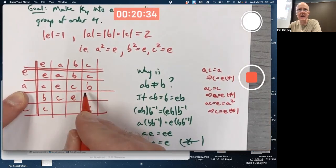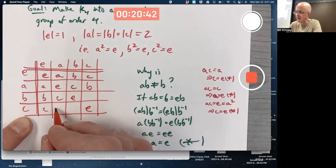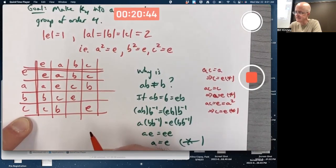Yes, each element in the group occurs in this role exactly once. An analogous argument would say C times A equals B as well.